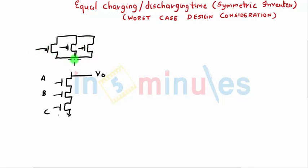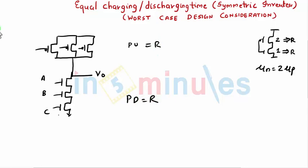We want this to be equivalent to our inverter, similar to what we did, where we know that mobility ratio is twice. So when W by L of this was 1, I got an R. Of this when it was 2, I was getting an R and I want my pullup to be equal to R and I want my pulldown to be equal to R. This is what we are looking at.